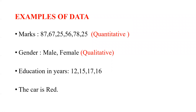Quantitative data can be numerically represented and calculations can be performed on them. In this case, marks is a quantitative data because it depicts numbers and is measurable. Gender is a qualitative data. Solve for the remaining two cases.